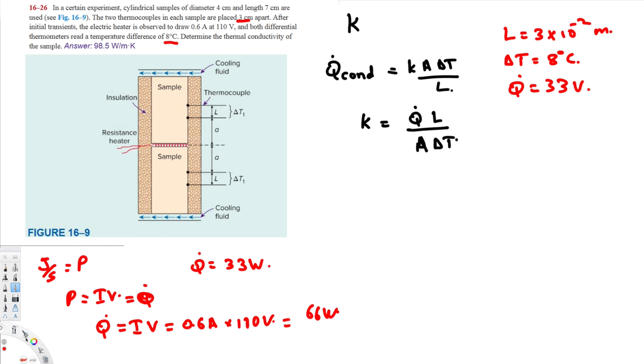And we also need the area. To find the area, this is a cross-sectional area, so we are going to use the circle sequence. The cross-sectional area of a cylinder is going to be a circle, and here the diameter is provided.